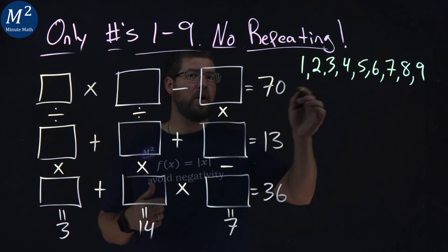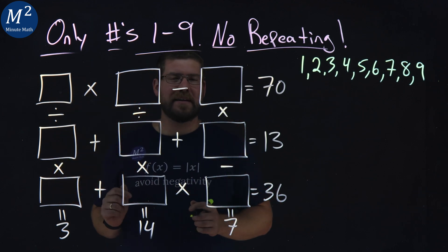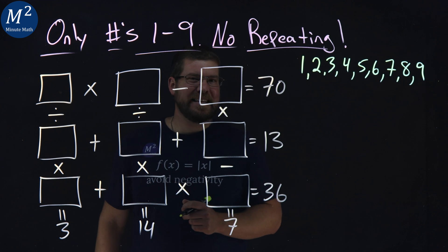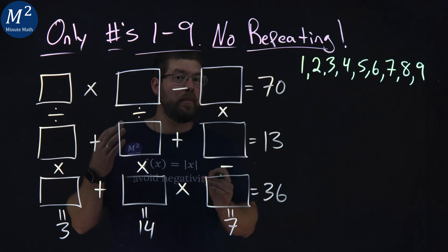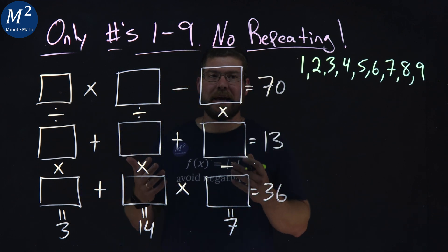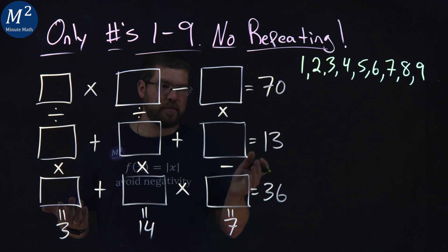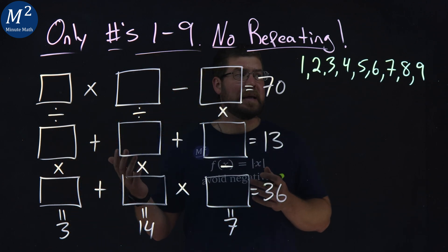All right, so as we're going through, we're going to cross off once we've confirmed that a number is placed. Now, when I'm looking at this, I see 70 is really the largest number by far, so I want to figure out how I can get 70, especially if there's division, that's going to be almost impossible, but multiplication, we can get there pretty close.